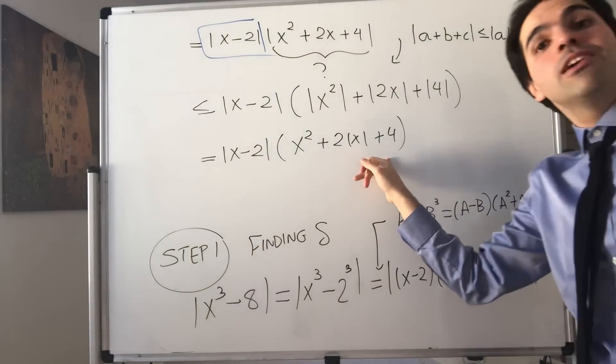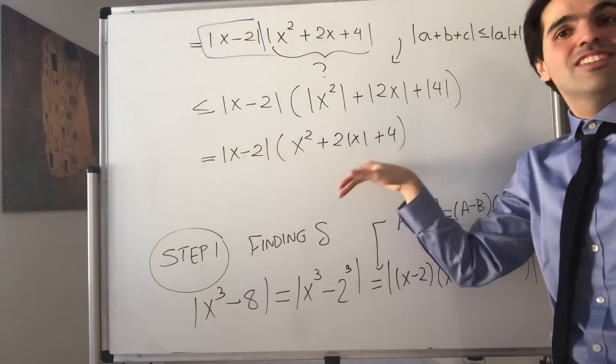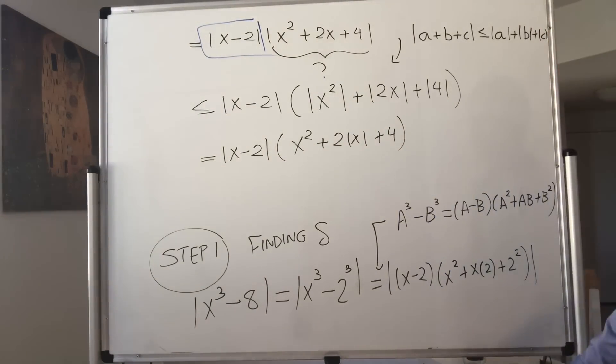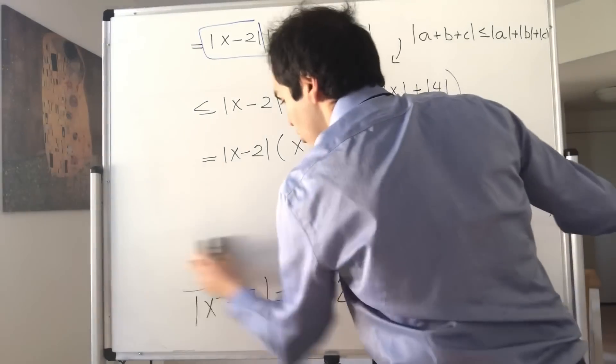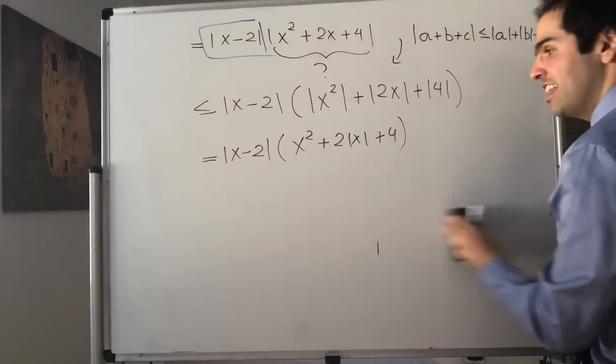Think like x being a bajillion. Then you get a bajillion squared plus 2 bajillions plus 4, whatever that means. In particular, we cannot make it smaller than a constant.